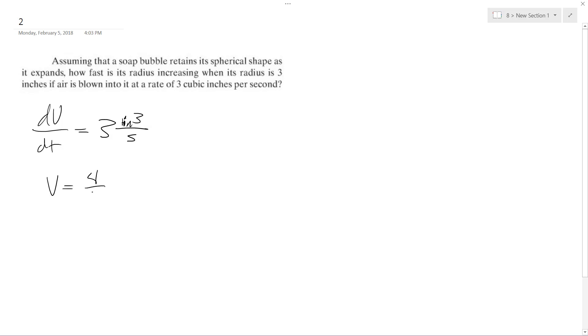And the volume of a sphere is four thirds pi r cubed. So this is with respect to dr/dt, which is what we're solving for. Yeah, so what we end up here is dV/dt is equal to four thirds times three pi r squared.